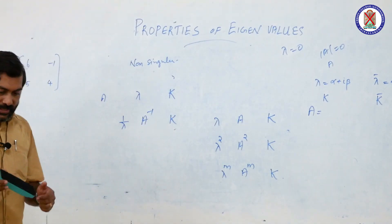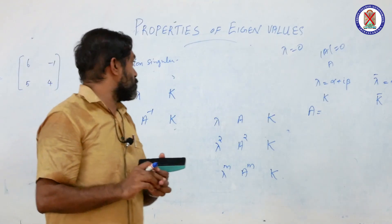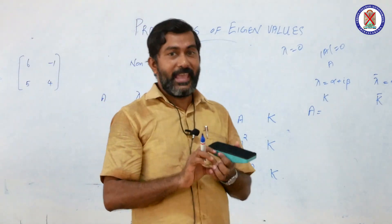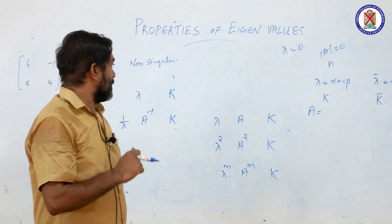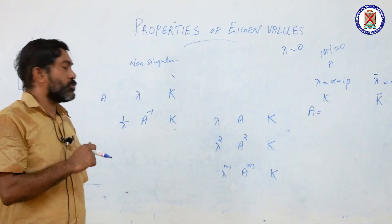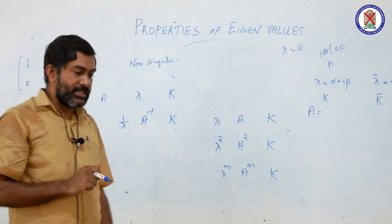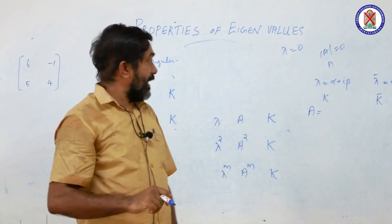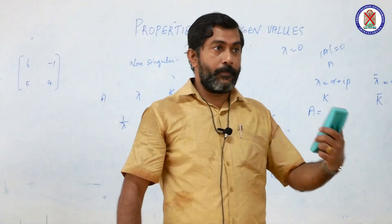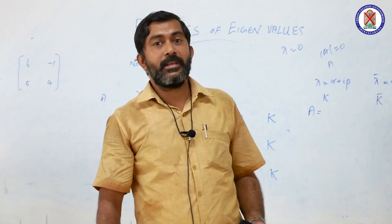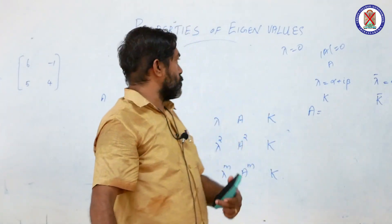So if we have the eigenvalues and eigenvectors of a matrix A, we can use them to determine the eigenvalues and eigenvectors of any power of that matrix and of the inverse of that matrix.